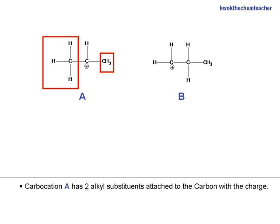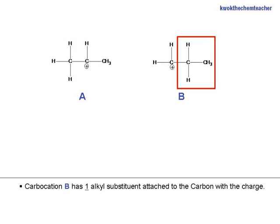Carbocation A has 2 alkyl substituents attached to the carbon with the charge. Carbocation B has 1 alkyl substituent attached to the carbon with the charge.